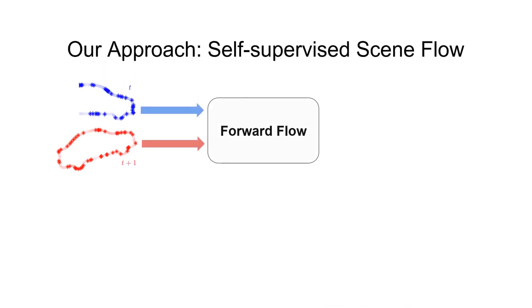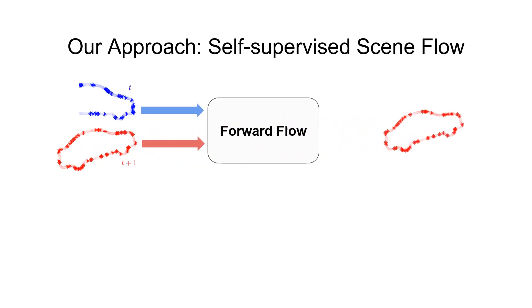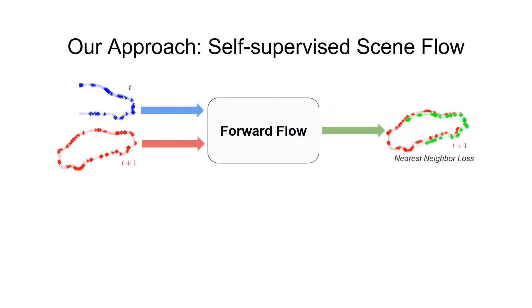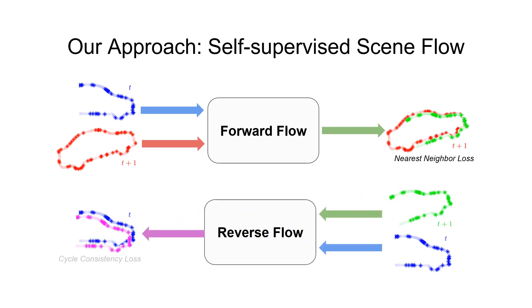Given two temporally sequential point clouds, taken at time t and t+1, shown in blue and red respectively, we estimate the forward flow of each blue point and project them into the red cloud's time frame, using a nearest neighbor loss to guide this flow estimate. The transformed clouds are then projected back to the original time frame using the same flow network, and a cycle consistency loss is applied.